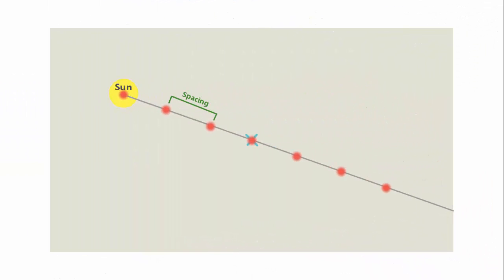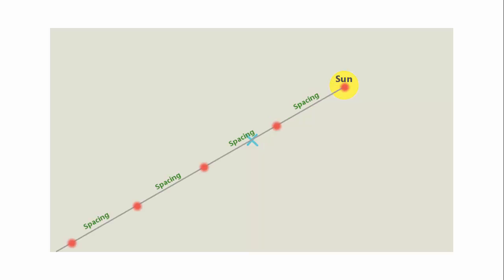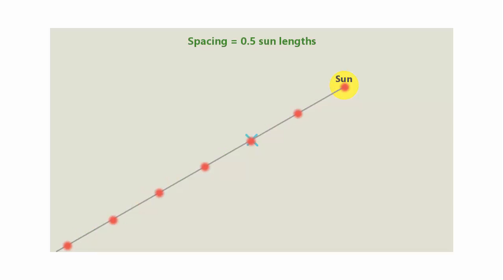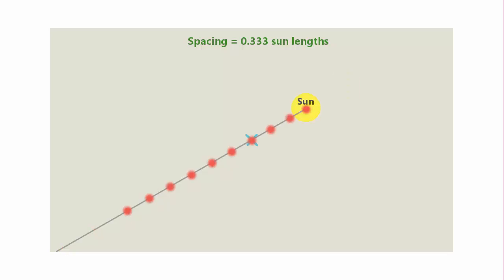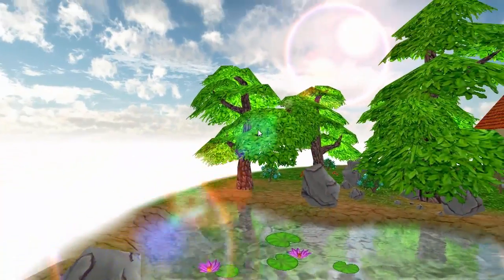So this spacing value is going to be the distance between each of the flare textures, but it's relative to the distance of the light source from the center of the screen. So for example, no matter where the sun is in relation to the center of the screen, we're going to say that the distance from the sun to the center is one sun length. The spacing value is then the distance between each flare texture in sun lengths, so if the spacing is a half they would all be spaced out like this, and if the spacing is a third they'd be like this. Because of this, the flare textures will obviously be closer together when the sun is closer to the center of the screen, and you can see here that that's exactly the sort of effect that we're trying to achieve.